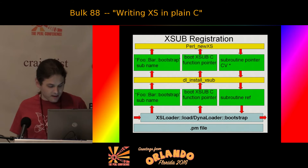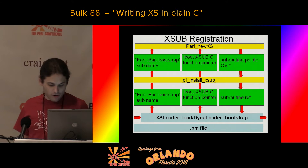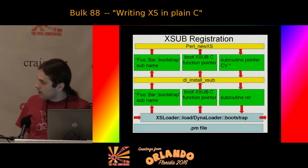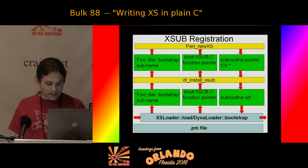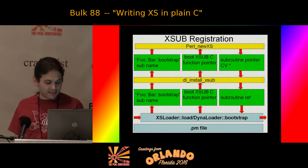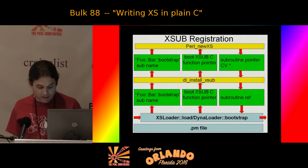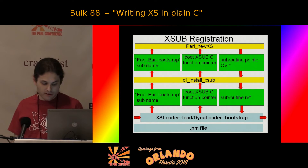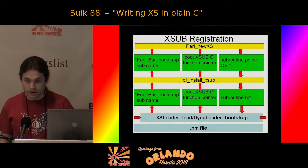Once the boot Xsub is created, it's executed — this is the first time you get control in the C language inside the Perl engine. Normally the boot Xsub will call newXS repeatedly and connect additional C function pointers to Perl subroutines. After the boot Xsub has run and registered all additional XS subs, XS loader returns control to your PM file.